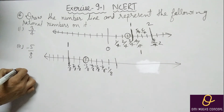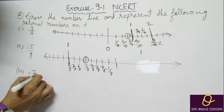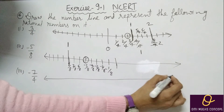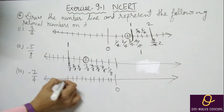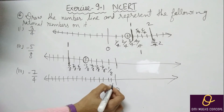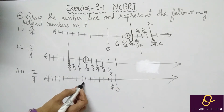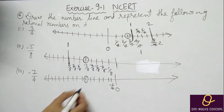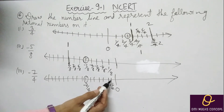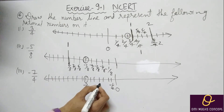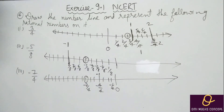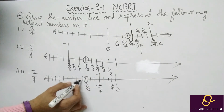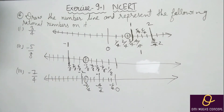Then minus 7 by 4 — number line aapko leni hai. 0, 1, 2, 3, 4, 5, 6, 7, 8, 9, 10, 11, 12, 13, 14, 15, 16. Minus 1 by 4, phir 2, 3, 4, 5, 6, 7 — yahan par 7 aayega, toh yeh wala point aap lena — minus 7 by 4. Ab usse pehle 1, 2, 3, 4 — minus 4 by 4 kya hoga hamare paas? Minus 1 — yeh bhi minus hoga, toh yahan par minus 1 likhoge. 7 ke baad 8 par kya aayega? Minus 2. 4th part you will do yourself.